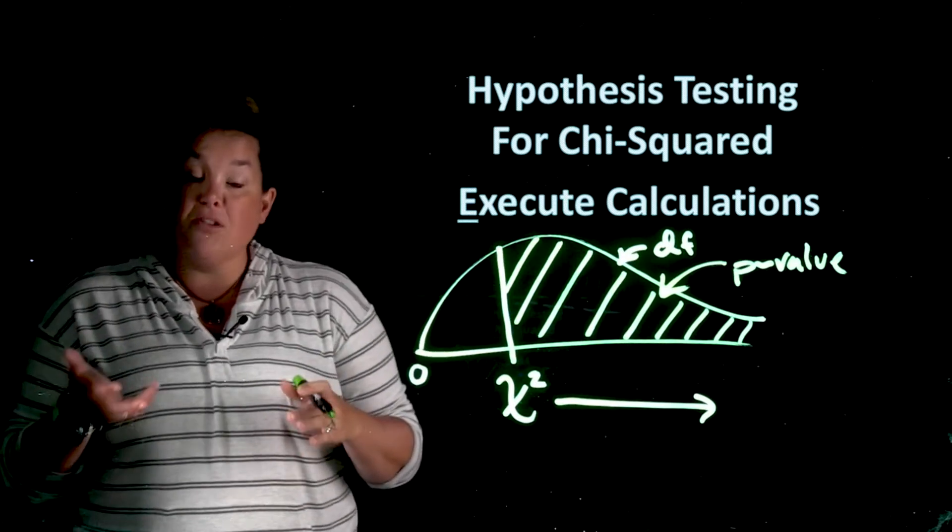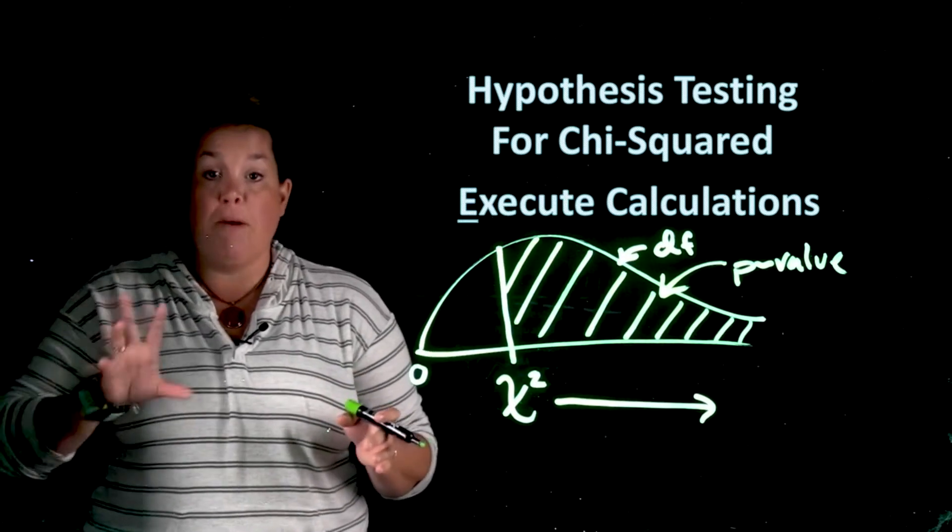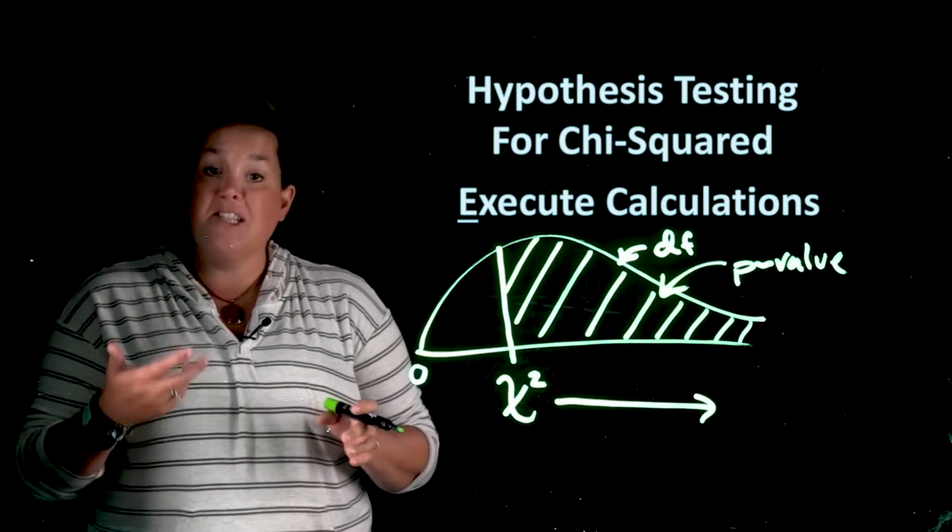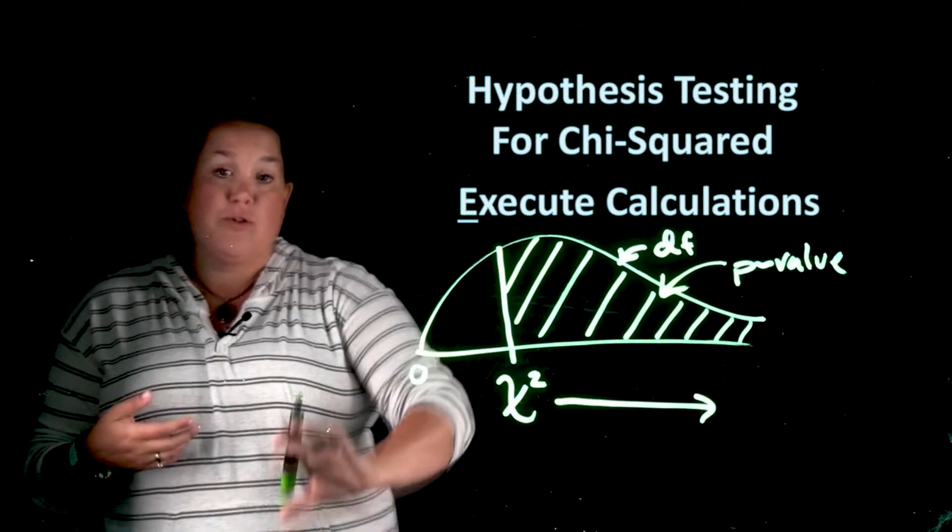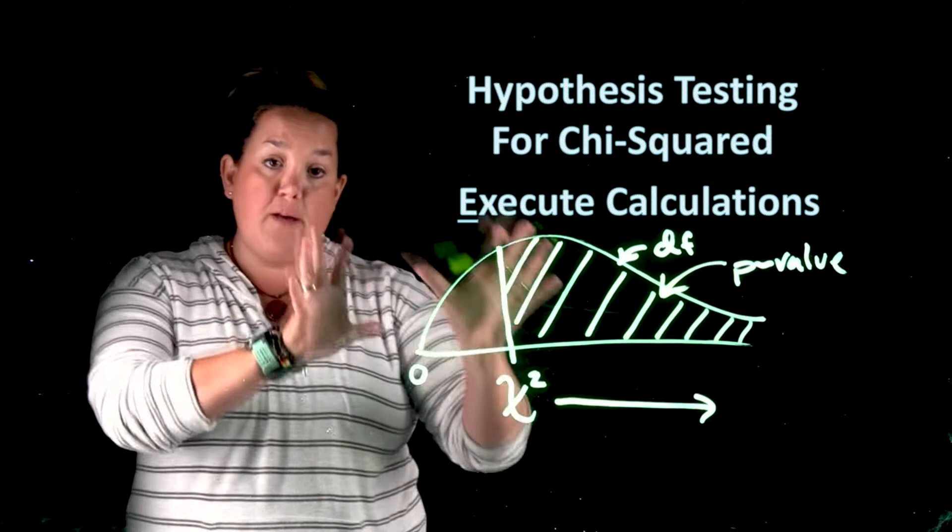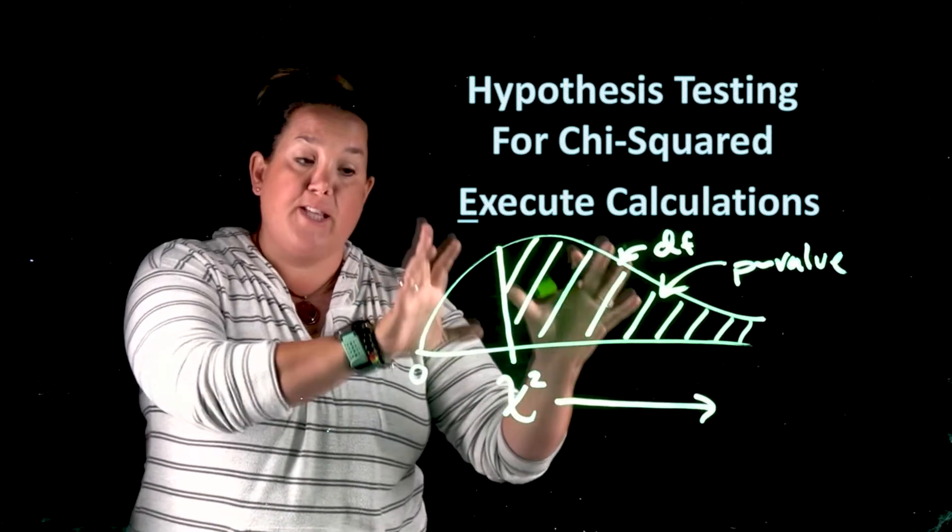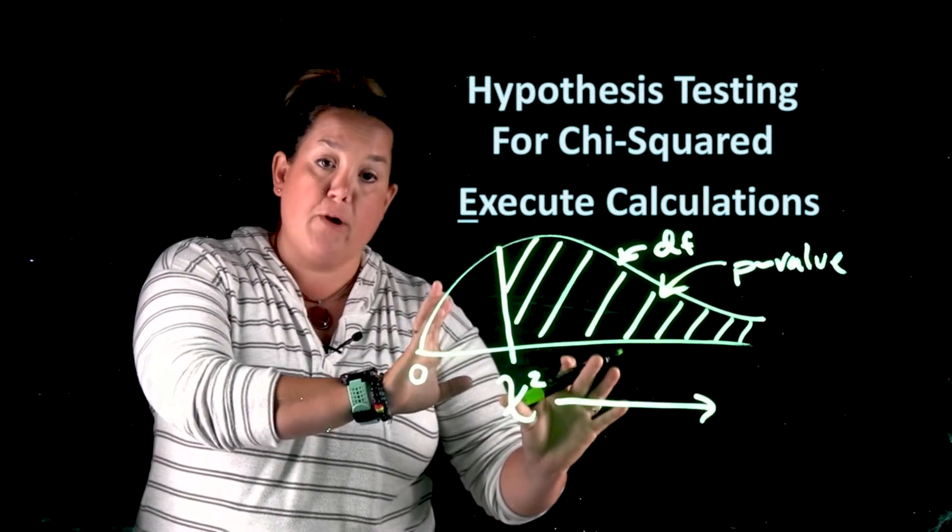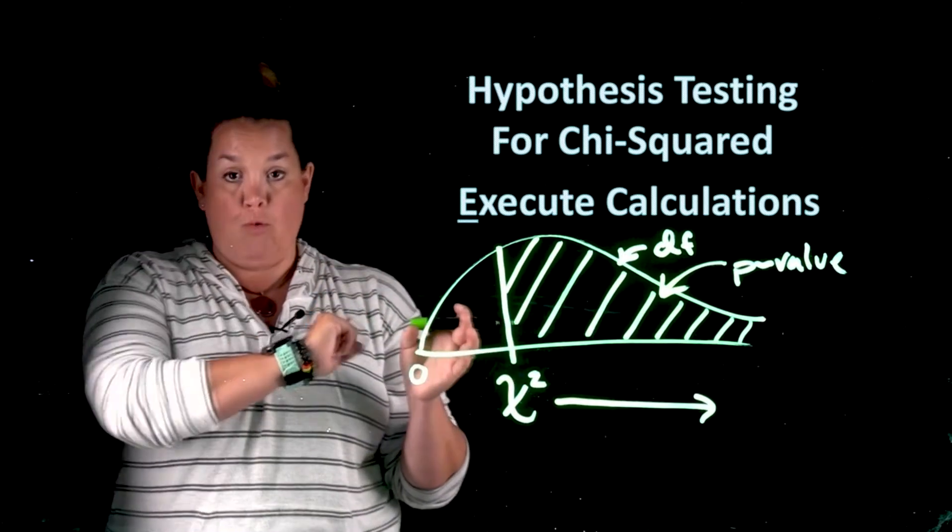Now a probability, if you remember way back from the math you took years ago, has to be between zero and one. So for these curves, the p-value is an area. It's the area to the right of the chi-squared and it has to be between zero and one.